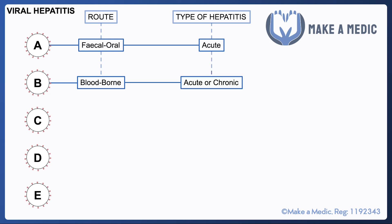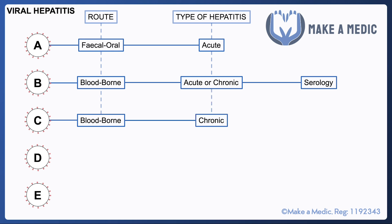Hepatitis B on the other hand is bloodborne and it can cause either acute or chronic hepatitis. The important thing to remember about hepatitis B is that this is the one that we tend to use serology to interpret the status of a patient who may have been exposed, or to know if they've been vaccinated. Serology questions come up quite often and they are quite mind-boggling unless you understand exactly how hepatitis B biology works.